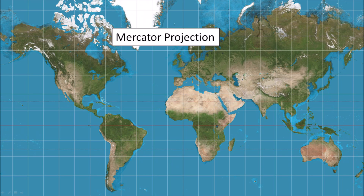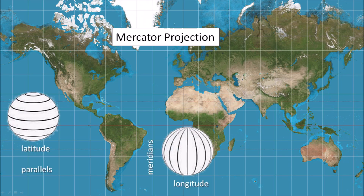We are all familiar with maps of the Earth represented as a Mercator projection, which is a cylindrical map projection designed by Flemish map maker Gerardus Mercator in 1569. This became the standard map projection for navigation because it preserves local directions and shapes. The horizontal lines are called parallels and they are used to determine latitude. The vertical lines are called meridians; they converge at the poles and are used to determine longitude.